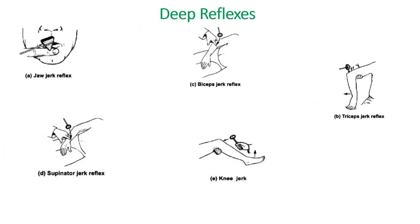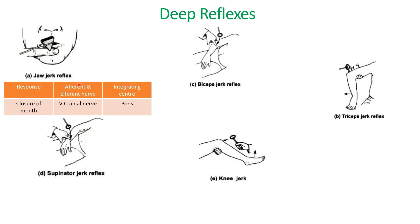Now let's see the deep reflexes. The first one is the jaw jerk reflex. We'll place the finger on the chin with the mouth open and strike the middle of the chin with a reflex hammer. Due to the jaw jerk reflex, closure of the mouth occurs.